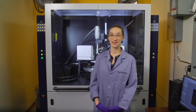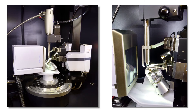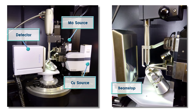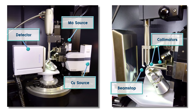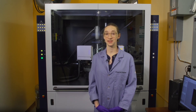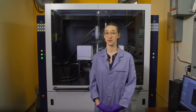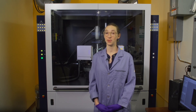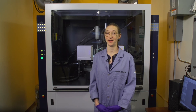Now we are ready to examine the diffractometer itself. This picture highlights general instrument components including copper source, molybdenum source, detector, beam stops, collimators, cryostream, and goniometer. When the instrument is under normal operating conditions, there is minimal risk to the user. However, regular monitoring is critical and it is important to be properly trained to be able to identify when there is a problem and to know what the risks are.